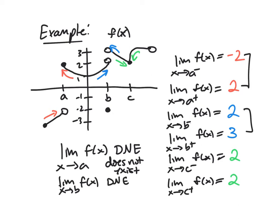But for C, they're approaching the same point, and we can see that there's just one value, 2, that the function is approaching no matter which side I'm looking at. So in this case, the limit as X approaches C of f(X) is 2.